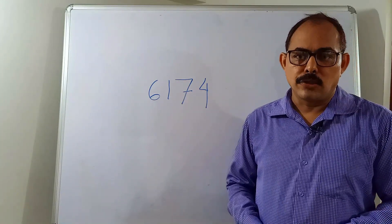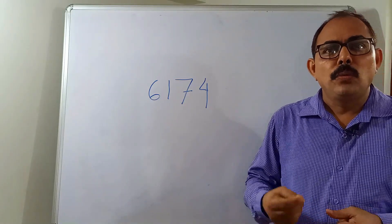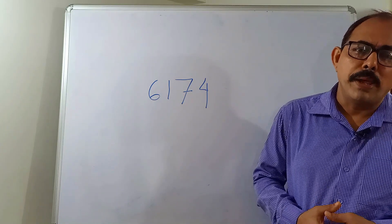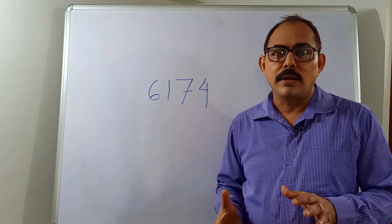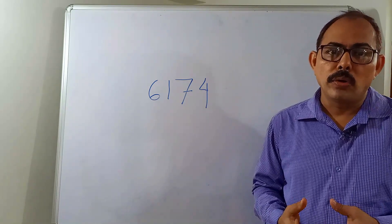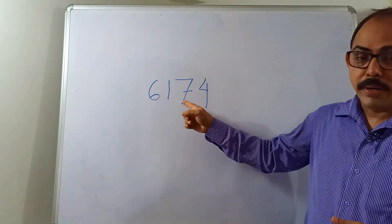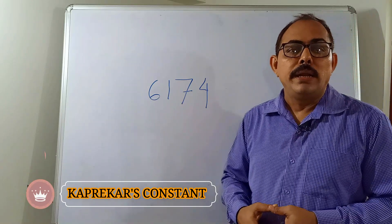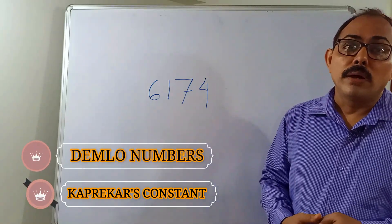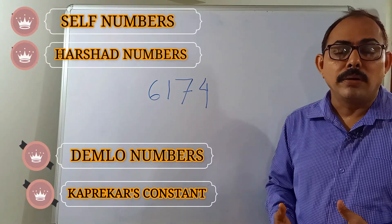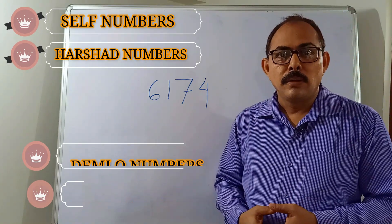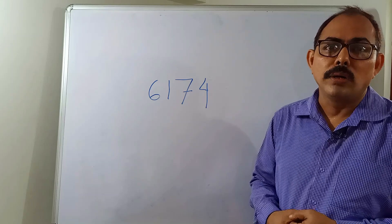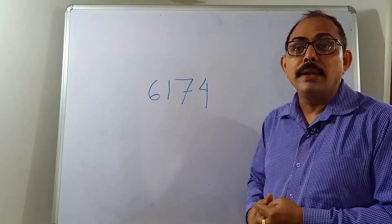He was a school teacher in a small school in Nashik, but he used to practice and practice with numbers and found out many interesting patterns. He explored and found out the Kaprekar constant 6174, Demlo numbers, Harshad numbers, self numbers, and many more things. Unfortunately, he was not known to the entire world for a long time.